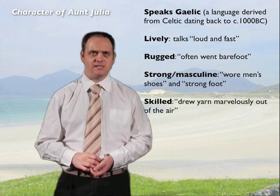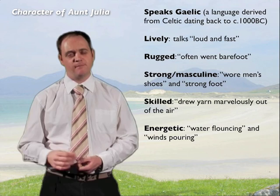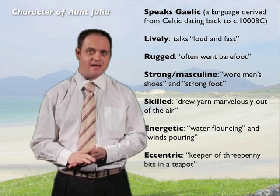She drew yarn marvellously out of the air, suggesting she is some sort of magician. She's also energetic, and we get this impression from two metaphors used by McCaig: water flouncing and winds pouring. Both flouncing and pouring are very active words full of energy. It could also be said that he found her a bit eccentric, as she was the keeper of threepenny bits in a teapot — a bit of a strange place to keep your loose change.